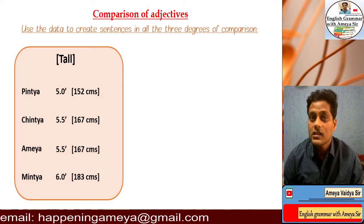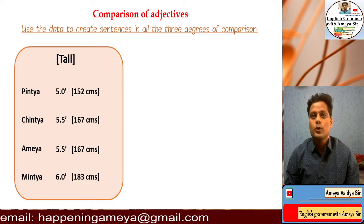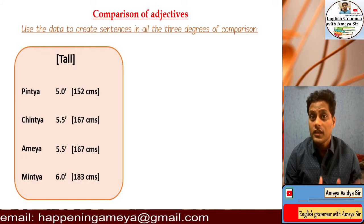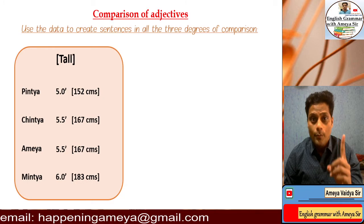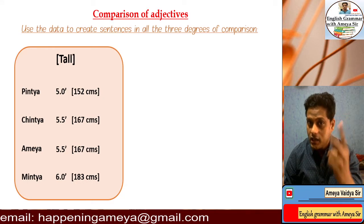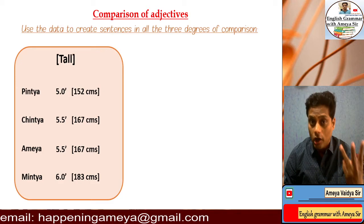The given data is about height, so the adjective to be used is 'tall.' The syntax for the degrees will be as follows: for the positive it will be 'as tall as,' for the comparative it will be 'taller than,' and for the superlative it will be 'the tallest.'